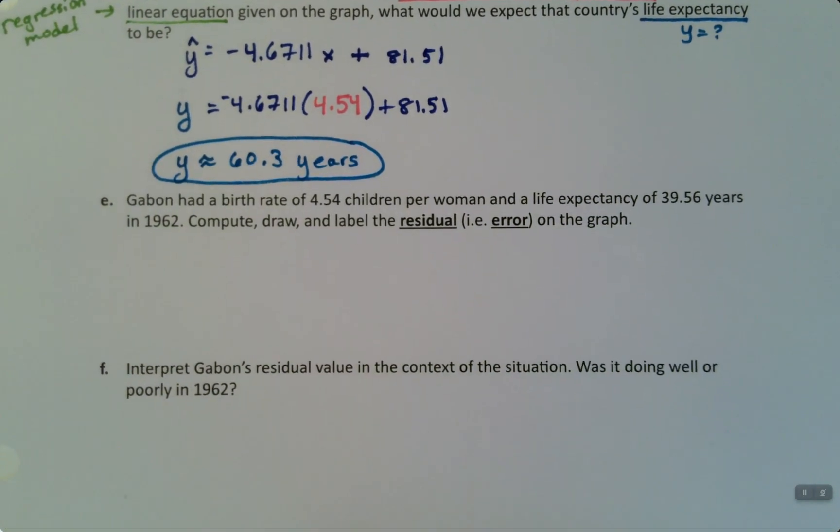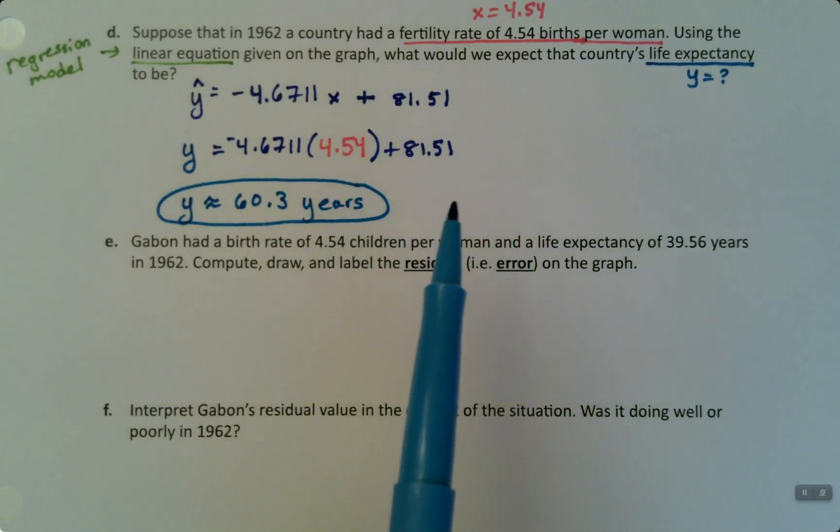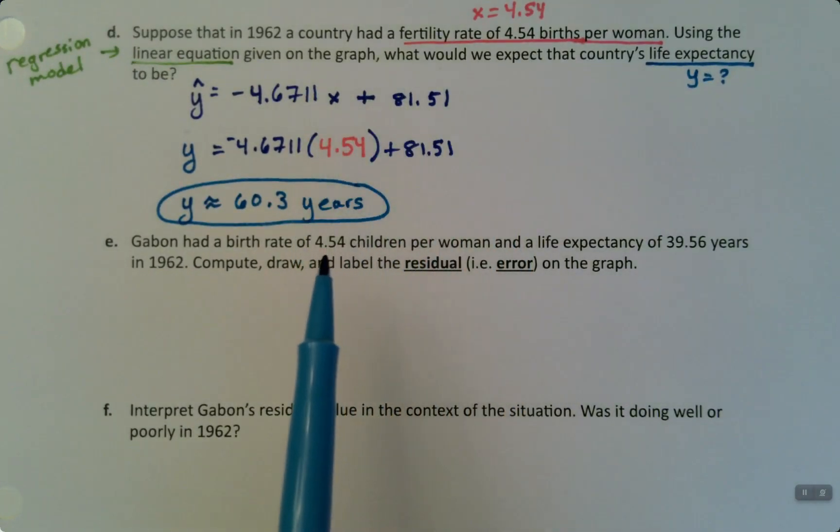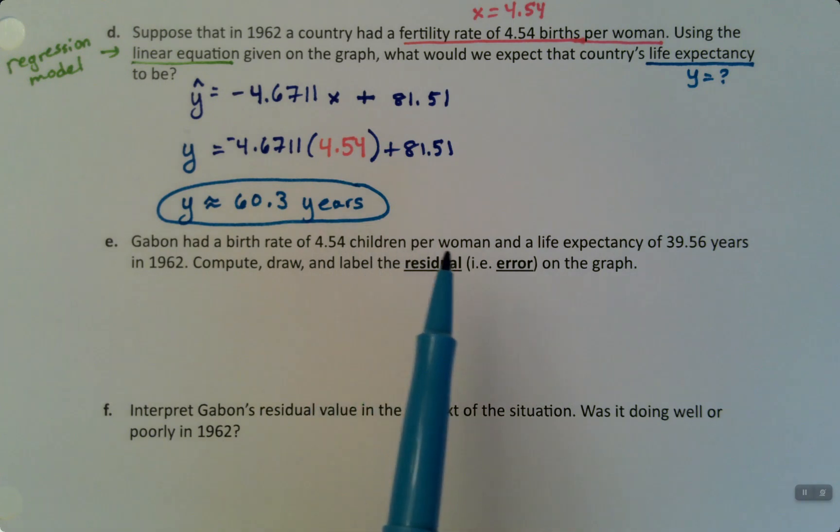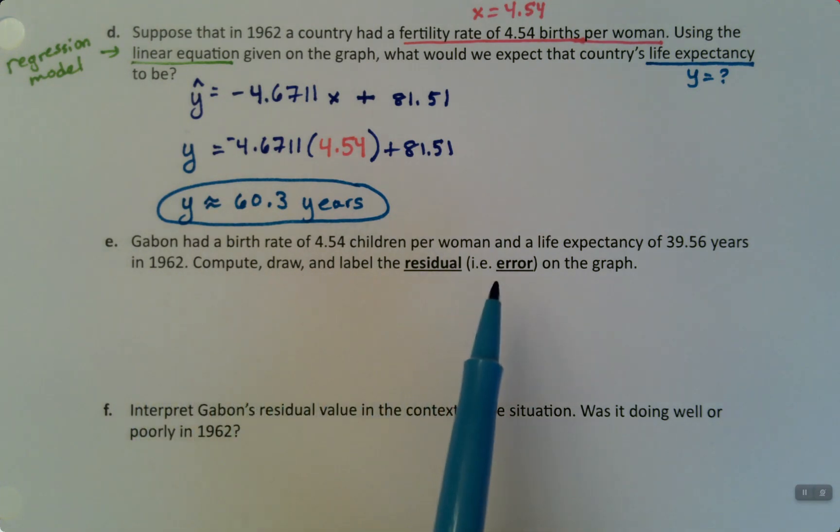You can see that it's 60.3. So that gives us our result. We see that y is approximately 60.3, and then its unit would be years. As always, when we have a unit in the problem, we use that unit. Now, Gabon had a birth rate of 4.54. So this came from a real country. There really was a country, it's in Africa, that had a birth rate of 4.54 children per woman and a life expectancy of 39.56 years in 1962. Compute, draw, and label the residual, in other words, the error on the graph.